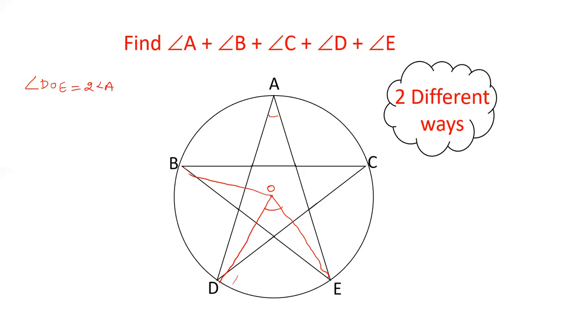Angle BOD equals twice angle C. Angle AOB equals twice angle E.